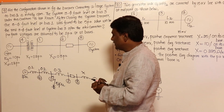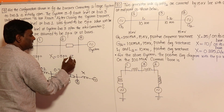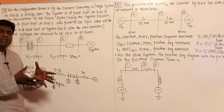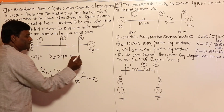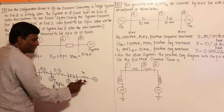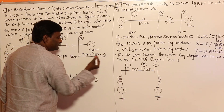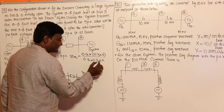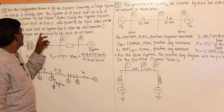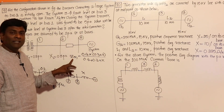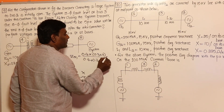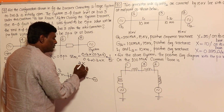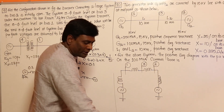Z-Thevenin is the parallel combination of the 0.4 branch and the (0.3 + X) branch: Z-Thevenin = 0.4 × (0.3 + X) / (0.4 + 0.3 + X) = 1/5. Solving this equation gives X = 0.1 per unit.